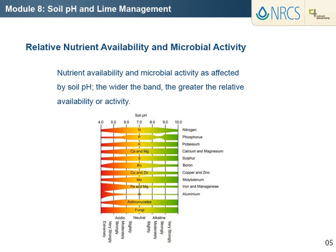Soil pH is important because it affects plant growth directly and also indirectly by affecting availability of essential nutrients, levels of phytotoxic elements, and microbial activity. The figure shows relatively how nutrient availability and microbial activity are affected by soil pH. The availability of iron and zinc, for example, is severely reduced in high pH soils. Even though iron is present in large quantities in soils, its availability in a form the plant can use is limited by reactions that form insoluble compounds at high pH.